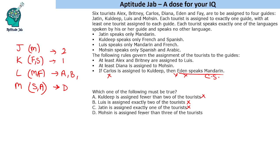The fourth statement says Mohsen is assigned fewer than three tourists. To falsify it, we would need to assign three or more tourists to Mohsen. Diana is already there; if we add two more, that's three plus two people assigned to Louis and Jatin/Kuldeep. With six total tourists, only one is left, and we still need at least one tourist for each guide. So we cannot assign three or more to Mohsen — Mohsen will always be assigned fewer than three tourists. That statement is completely true.